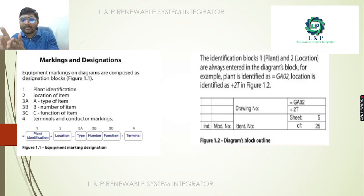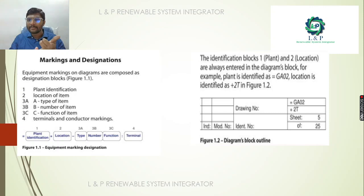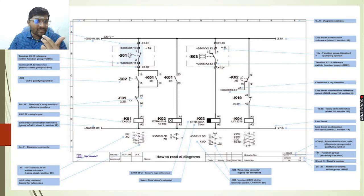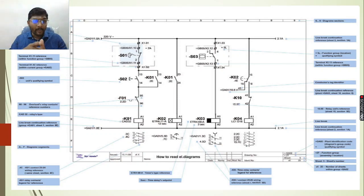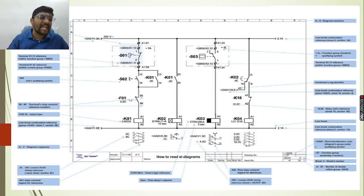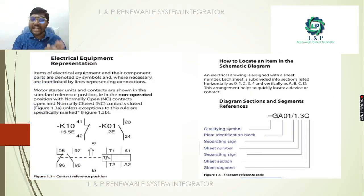As you can see, we have a diagram plot outline on the right-hand side as an example, showing a block outline, drawing number, identification number, and sheet numbers. This is an overview of a single-line circuit diagram. It contains diagram sections, segments, squares, line break continuations, terminal numbers, relay type, function group, sheet number, number of sheets, line break, and line break continuation. We are going to understand each of these elements essential to drawing or creating new diagrams.